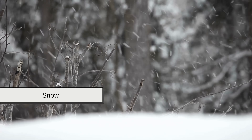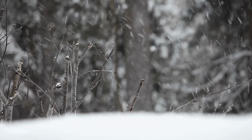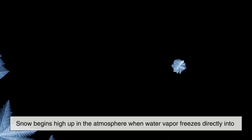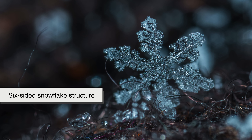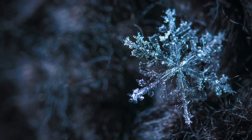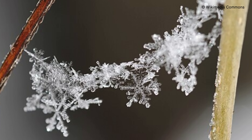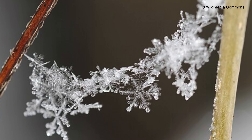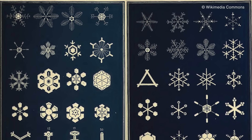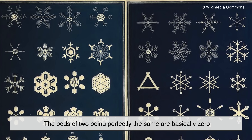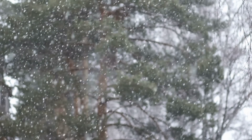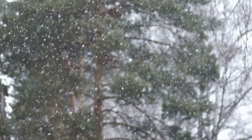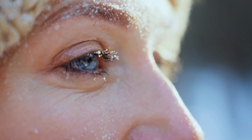Let's start with snow, the classic winter superstar. Snow begins high up in the atmosphere when water vapor freezes directly into ice without first becoming liquid. This process, called deposition, creates the iconic six-sided snowflake structure. The temperature, humidity, and movement of air around each forming crystal shape the patterns we see, from simple hexagons to complex, feathery designs. Many people think snowflakes are identical, but in reality, the odds of two being perfectly the same are basically zero. Each one follows its own tiny, chaotic journey as it falls through the clouds, freezing, melting, and refreezing in its own way. By the time it reaches your glove or eyelash, it has lived a miniature adventure.